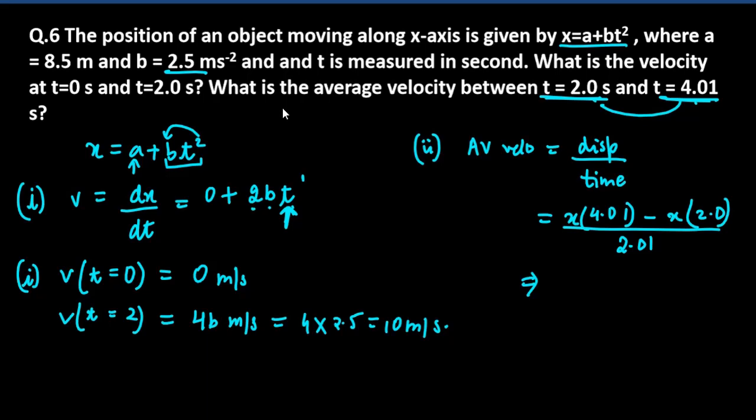Why did I write 4.01? It means what was the value of x at this time. So you have to place t values: a plus b times 4.01 square, minus a minus b times 2.0 square, all divided by 2.01.